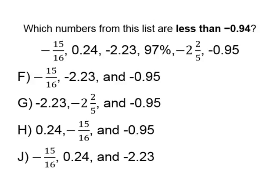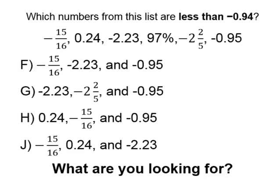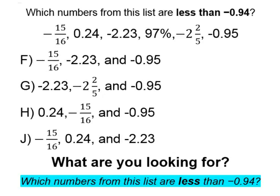There's an easy way to eliminate answers so that you can increase your chance of getting it correctly without converting all of the numbers. We will have to convert some numbers to decimals to find our answer, but we can eliminate some answers first to build our confidence. We are looking for numbers in the list that are less than — meaning smaller than — negative point nine four.